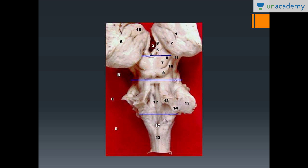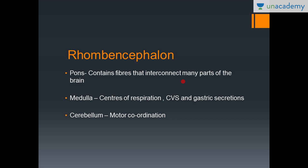The rhombencephalon consists of the pons, the medulla and the cerebellum. Pons contains fibers that interconnect many parts of the brain. The medulla has centers for respiration, cardiovascular regulation and gastric secretion. Usually if someone is struck on the head at the back, they may die because the medulla is injured — it contains centers of respiration and cardiovascular control, so a strong blow to the back of the head can kill the person.